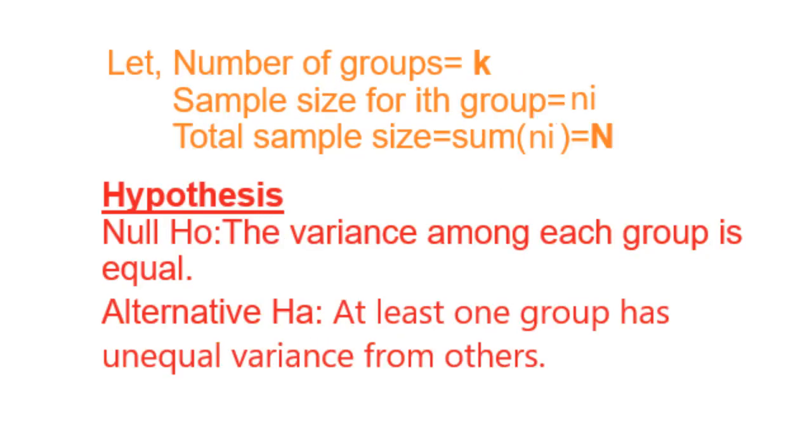Suppose we have k number of groups and each group has sample size ni. So total sample size is the sum of ni, say capital N.